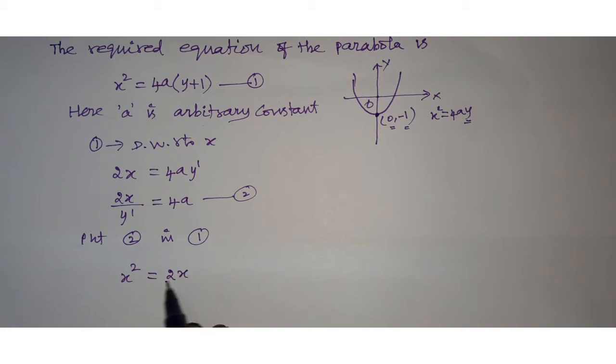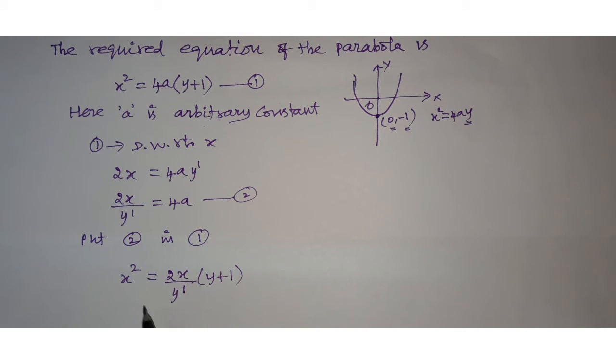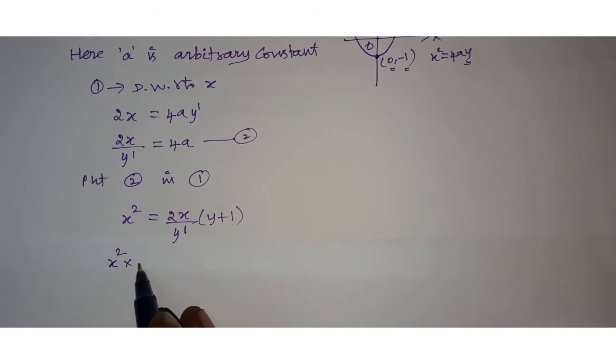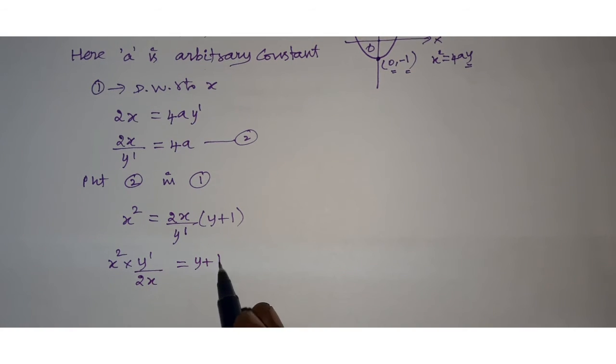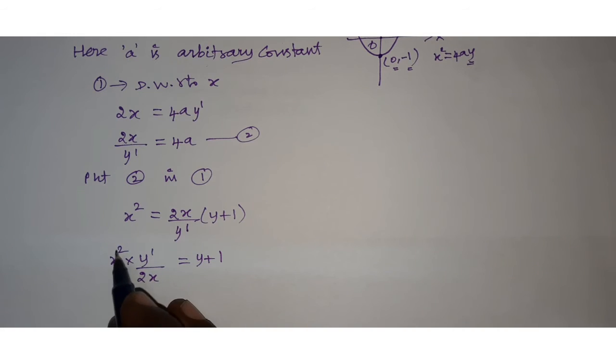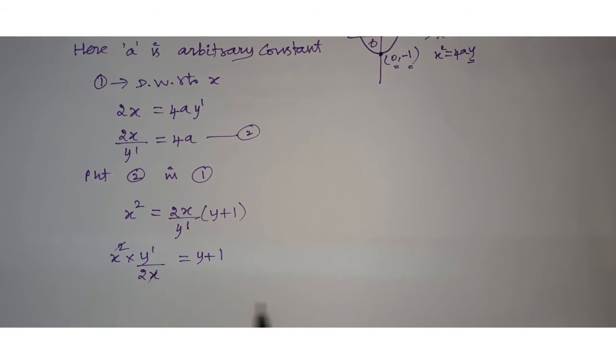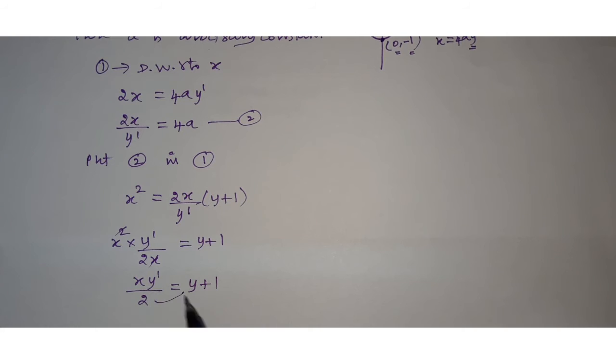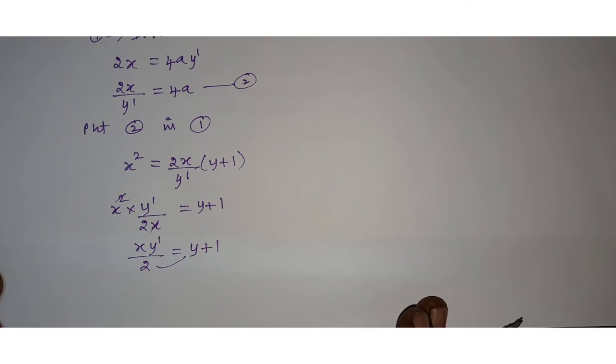Put equation 2 in 1, that is 4a. So x² = (2x/y')(y+1). x²·y' = 2x(y+1). Finally, x·y' = 2y+2.